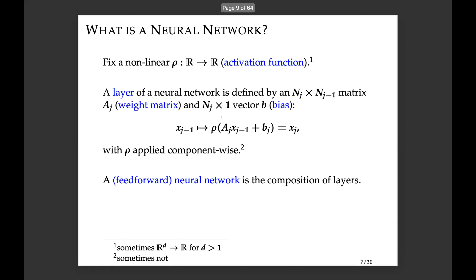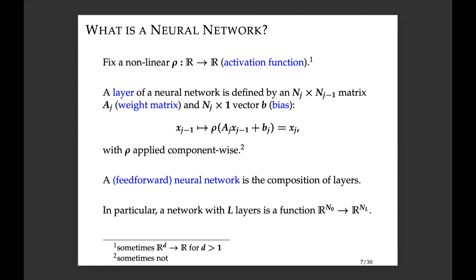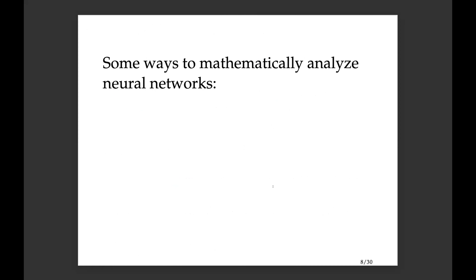A neural network is just the composition of these layers: affine linear map, activation function, affine linear map, activation function, and so on. What is learned during training are precisely the entries of these matrices and vectors. We can view a neural network with L layers as a function taking inputs in ℝ^n_0 and outputting in ℝ^n_L, where n_j denotes the size of each layer.